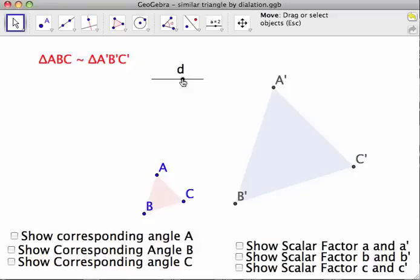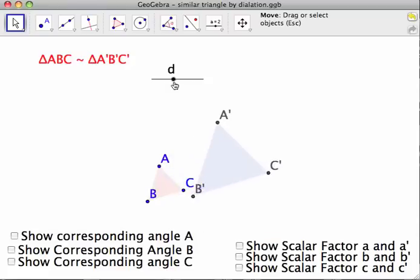And no matter how much I slide D, they will always be similar. Even if it's smaller, it's similar. So you can go large, small.